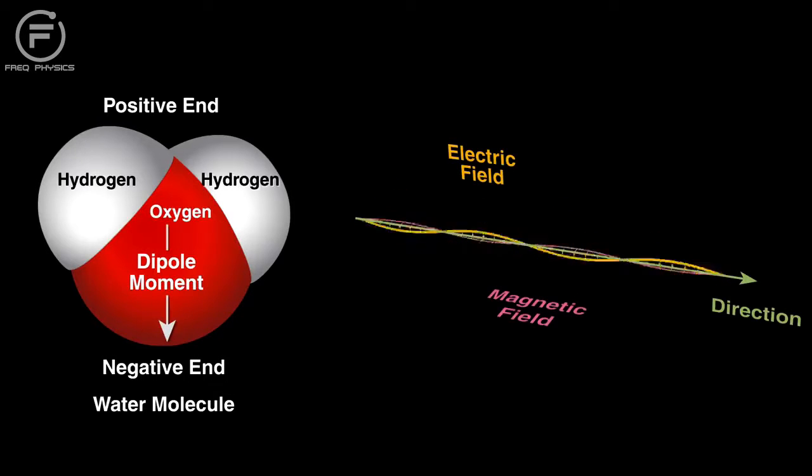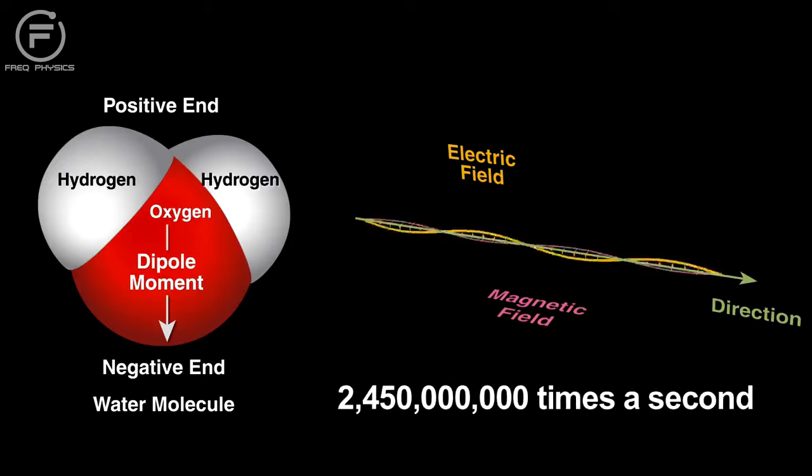By definition, the waves have electrical and magnetic fields that change direction rapidly. For this oven, the direction of the fields change 2.45 billion times per second.